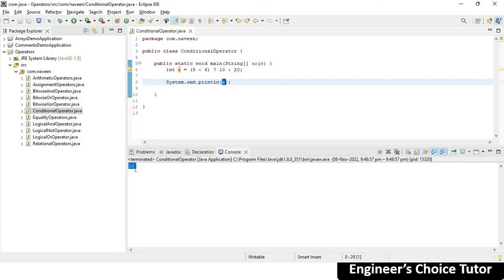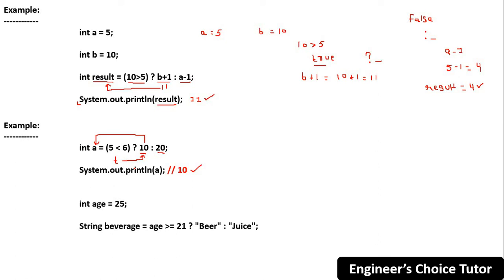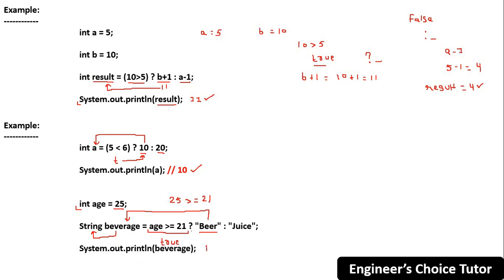For a String example: `int age = 25` and `String beverage = (age >= 21) ? "beer" : "juice"`. The condition is `age >= 21` — since age is 25, and 25 is greater than 21, this is true. So the value after the question mark, which is `"beer"`, is assigned to the beverage variable of type String. Printing this will give you `beer` as output.